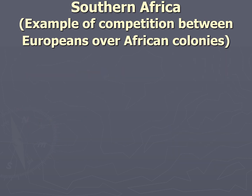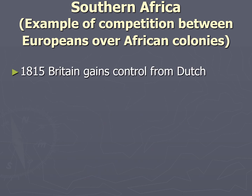Unfortunately, we cannot discuss every African colony due to time restrictions, so I have chosen Southern Africa as a case study. The first Europeans to come to Southern Africa were the Dutch in the 1600s. They settled many Dutch subjects who were mostly farmers. These Dutch settlers over several generations would identify less with the Netherlands and more with Southern Africa — these folks were known as the Boers.